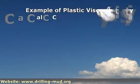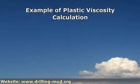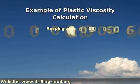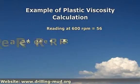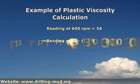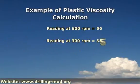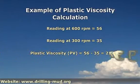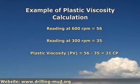Example of plastic viscosity calculation. For example, you have these values from a viscometer: rating at 600 RPM is equal to 56, rating at 300 RPM is equal to 35. Plastic viscosity is equal to 56 minus 35, which equals 21 centipoise.